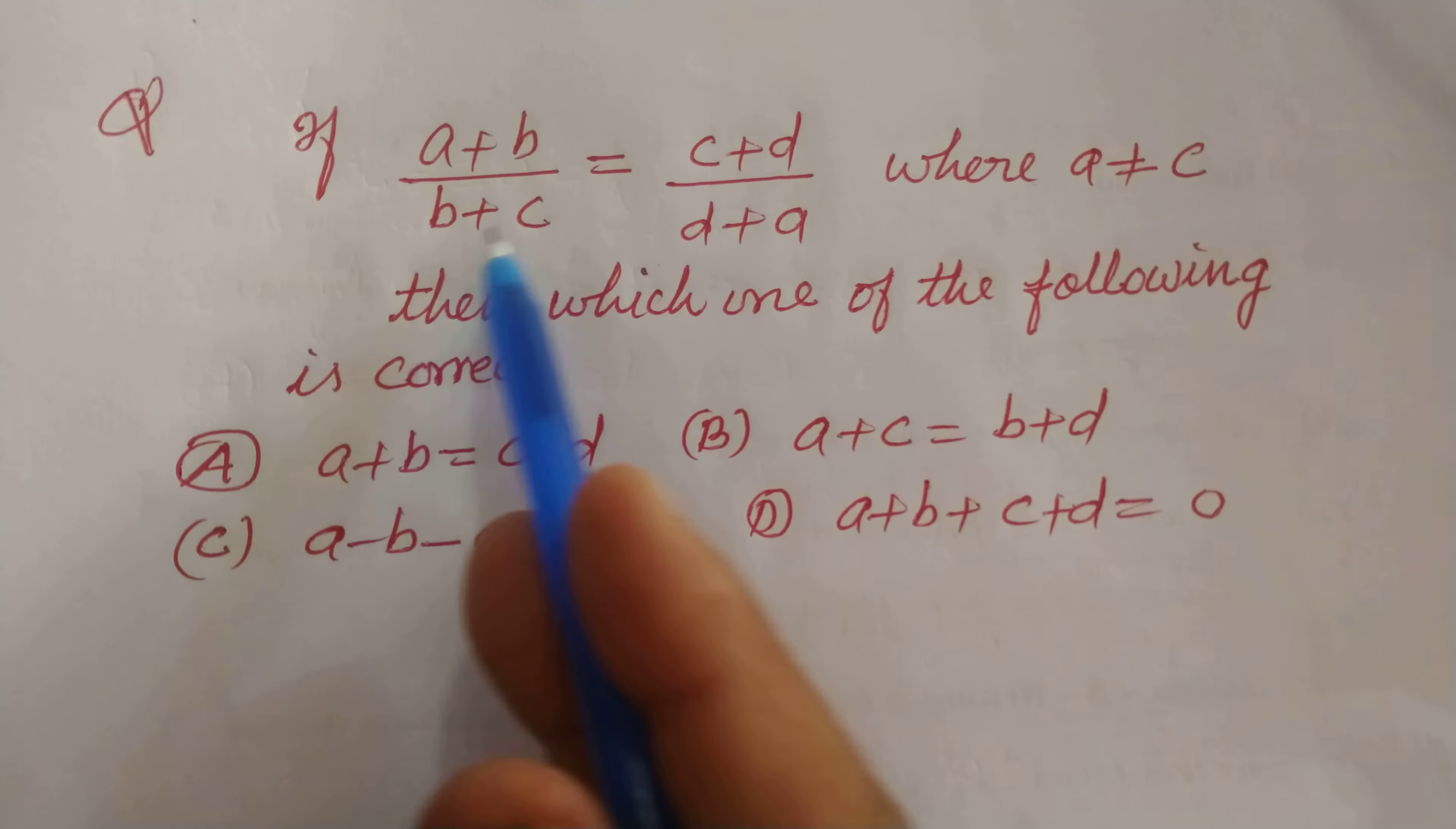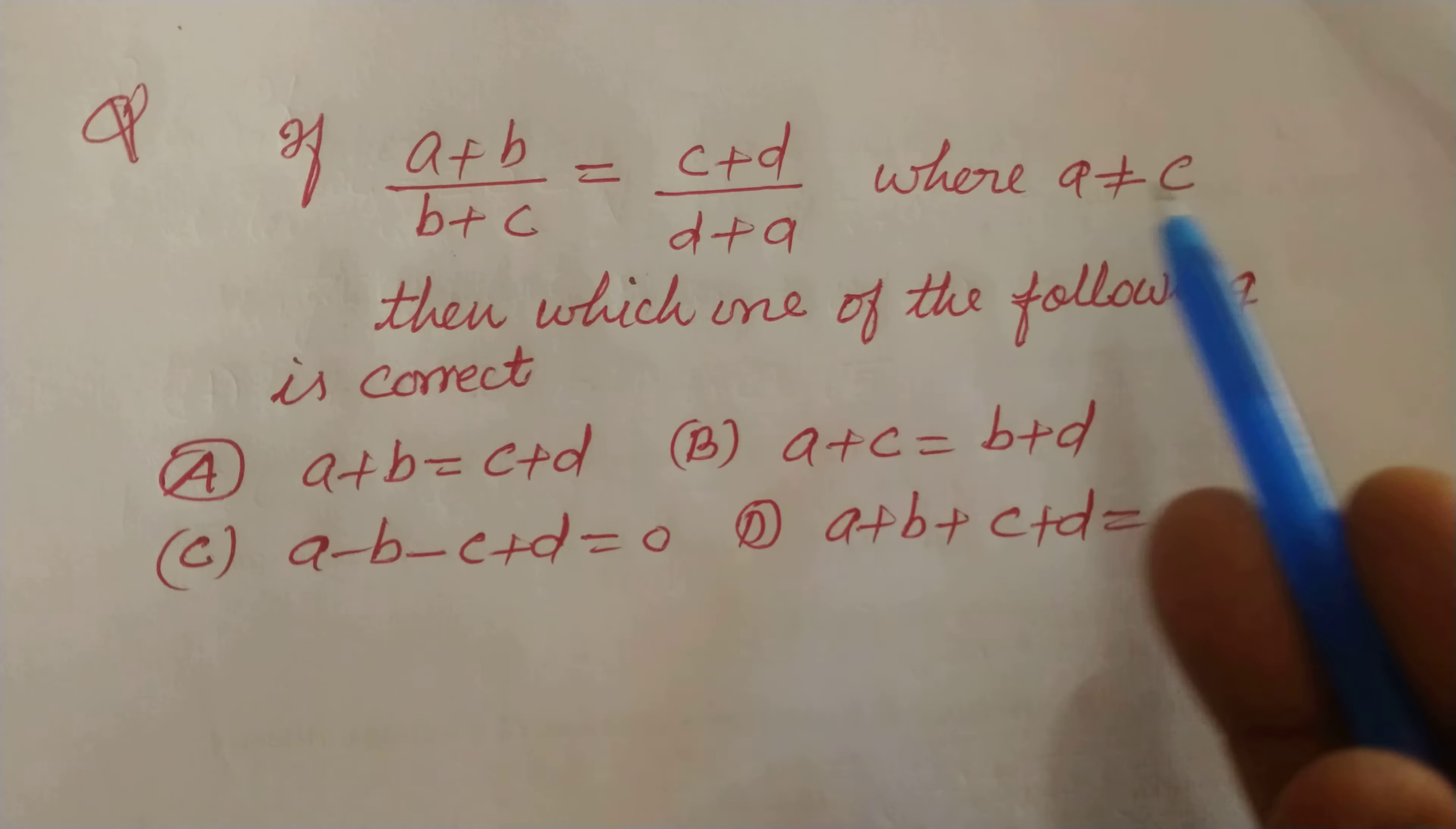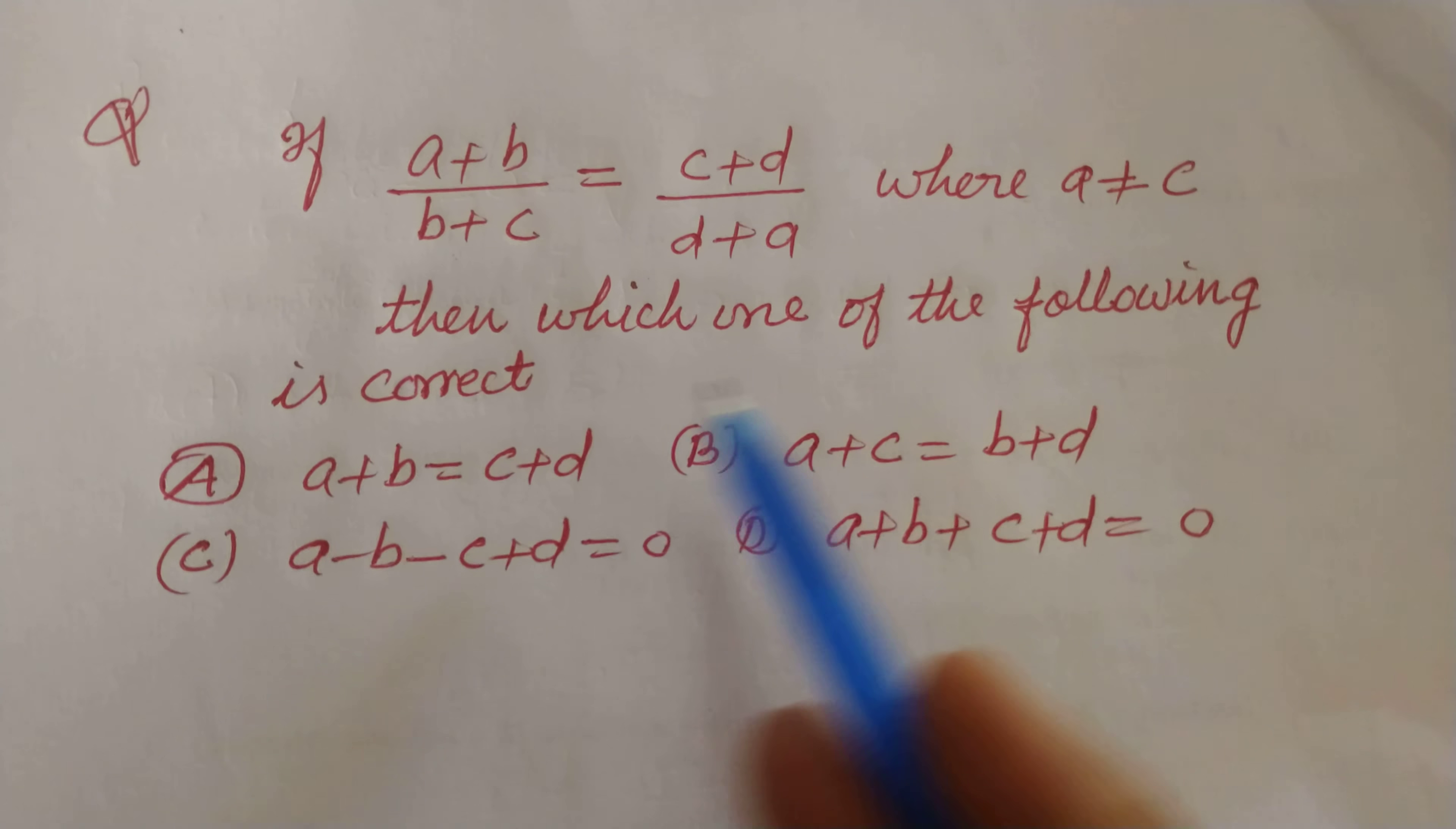If (A + B)/(B + C) = (C + D)/(D + A), where A does not equal C, then which of the following is correct?